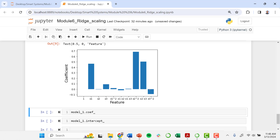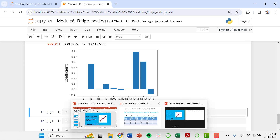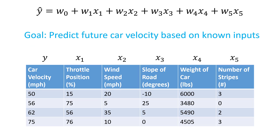When we're looking at the magnitude of our coefficients to judge feature importance, we're really looking at the absolute value. A large negative number is also important — it just means that there is a negative correlation there. Going back to our data, some of these correlations might be negative but still very important. The weight of the car, for example, we would expect to be inversely correlated with car velocity — the heavier the car at the same throttle position means we expect a negative correlation, so heavier car means slower car.